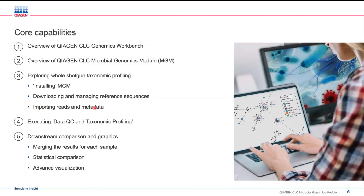Once we've done the prerequisite work of getting the reads, the reference, and our metadata in, we're going to execute this workflow for data QC and taxonomic profiling, where we'll end up with counts for each taxonomic unit in our table. Then, once we've done that per sample, we're going to merge our samples together so we can do statistical comparison and advanced visualization.